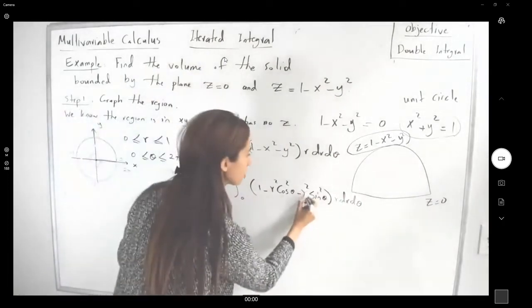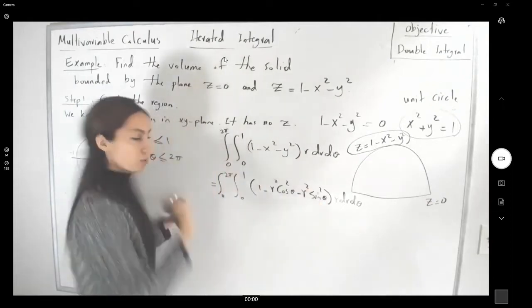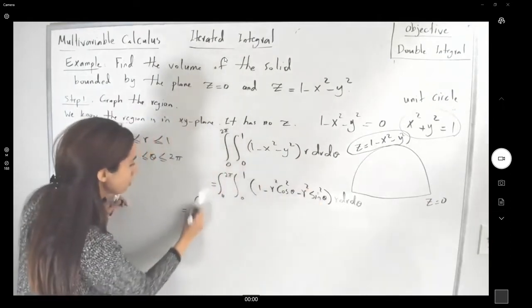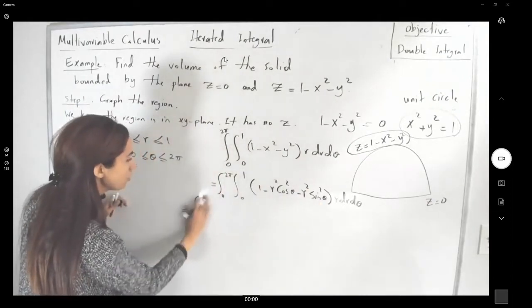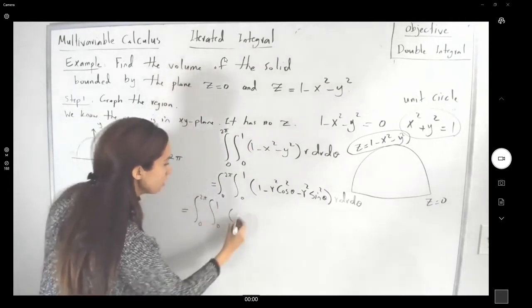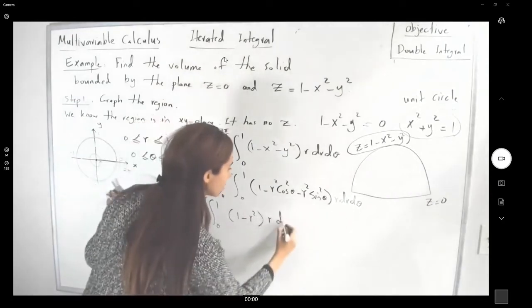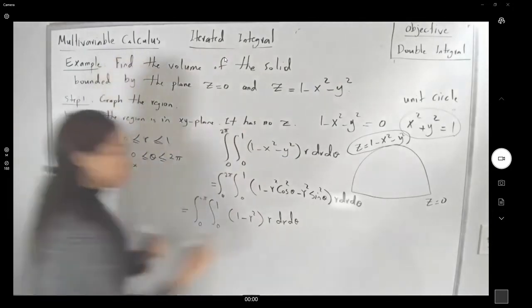Well, here if you factor out r squared, you get sine squared plus cosine squared, which is 1. So this guy is equal to the integral 0 to 2π, integral 0 to 1, 1 minus r squared, then you have r dr d theta.